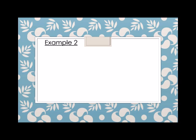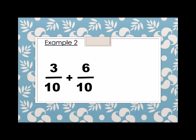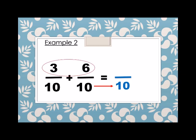Next, example number 2. We have 3 over 10 plus 6 over 10. Again, same denominator. So the denominator of the answer is always 10. And then for the numerator, we simply add the numerators. So 3 plus 6 is equals to 9. So the answer is 9 over 10.